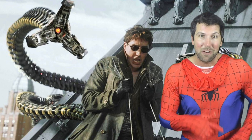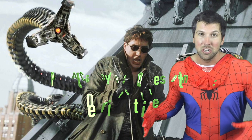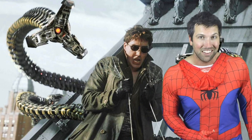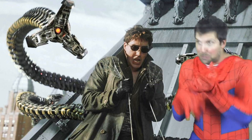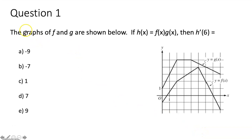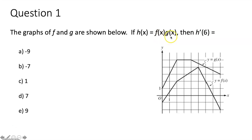Question one says the graphs of f and g are shown below. If h of x is equal to f of x times g of x, then h prime of six is equal to what? We have a graph of f of x and g of x, and h of x is equal to f of x times g of x. We need to find the derivative of h at x equals six. This is testing your knowledge of the product rule because it's asking you to take the derivative of h of x, which is equal to a function times a function.